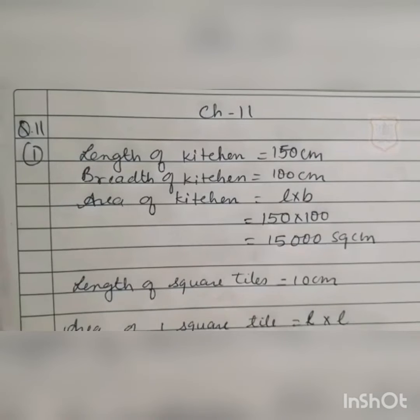The formula for perimeter of a square is 4 multiplied by L. So, 200 is equal to 4 multiplied by L. We will divide 200 by 4 to get the length, which is 50 cm. Now, the area of the square carom board is L into L, so 50 into 50 gives us 2500 square centimeter. Therefore, the area of the carom board is 2500 square centimeter.